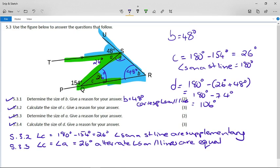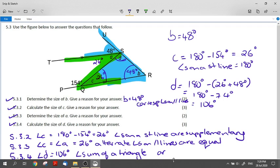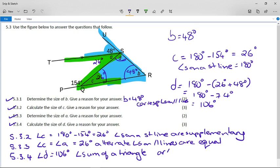Now, 5.3.4. Calculate the size of D. Angle D, which one was angle D? It was this one over here and we did the calculation over there. So angle D equals 106 degrees. And we can say angle sum of a triangle, because remember that blue triangle, it's the last angle of the blue triangle. Or I would accept because you knew A was 26, you can say also angles on a straight line add up to 180 degrees. And there we go. We've solved all of this geometry quite easily.